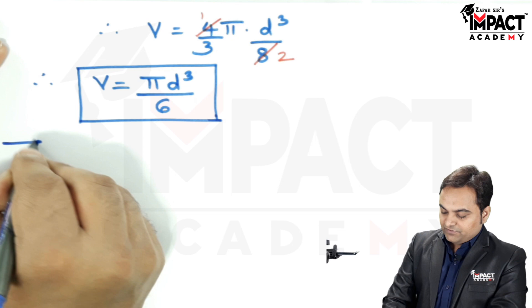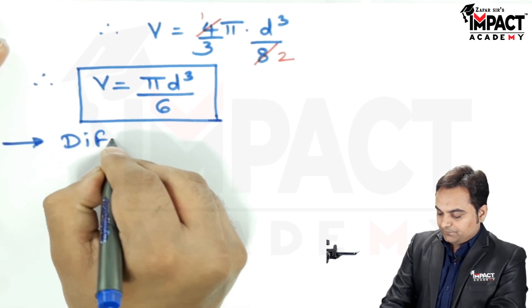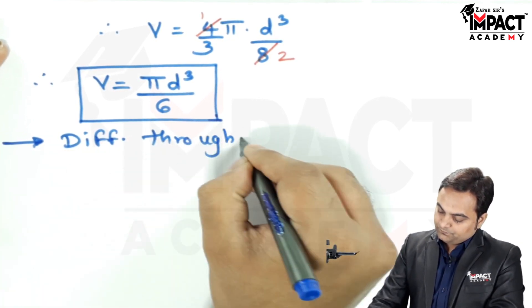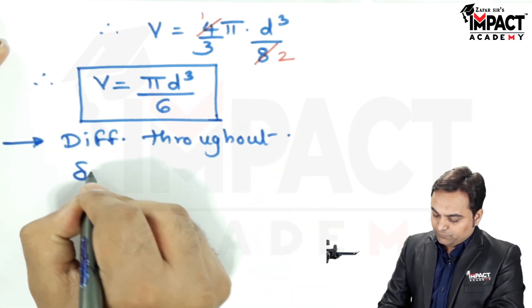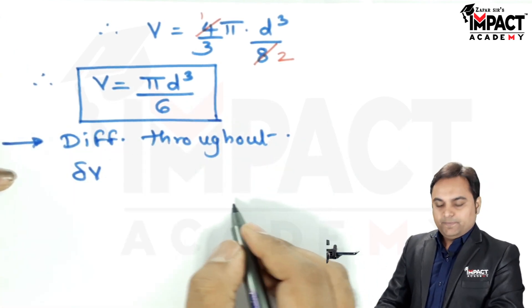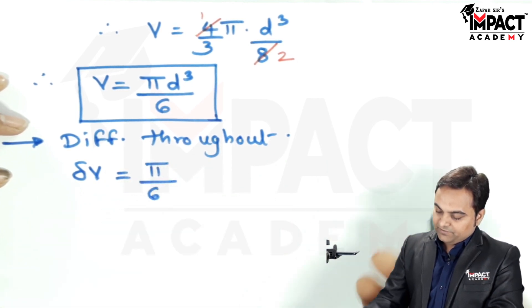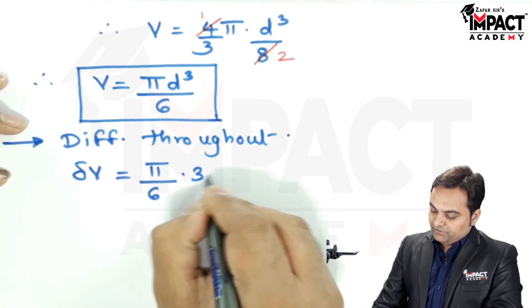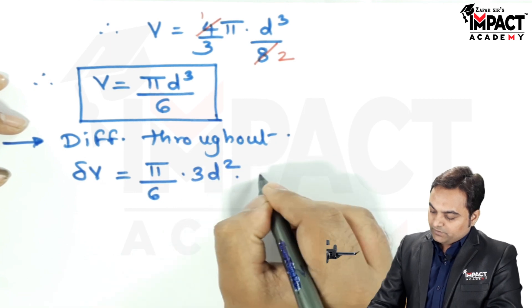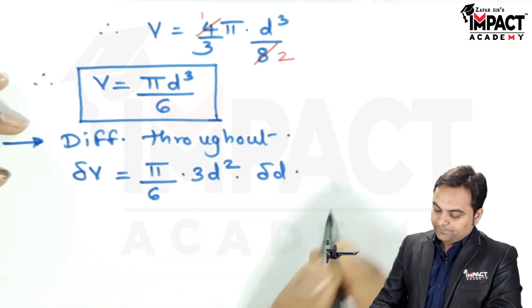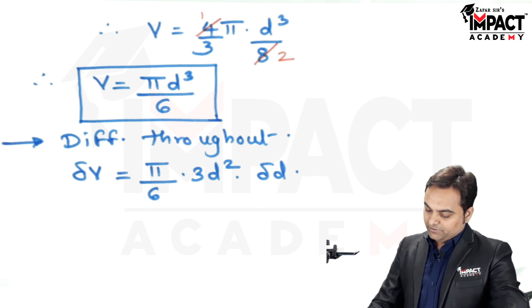The next step would be, I would be differentiating this equation. So, we have, instead of V, it would be delta V. Then, Pi by 6 would remain as it is. For D cube, it would be 3D square, into delta D. Then, after reaching up till here.